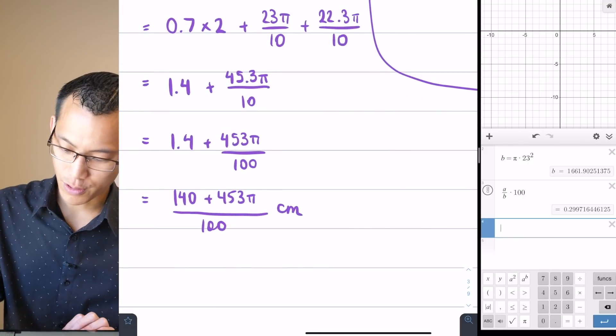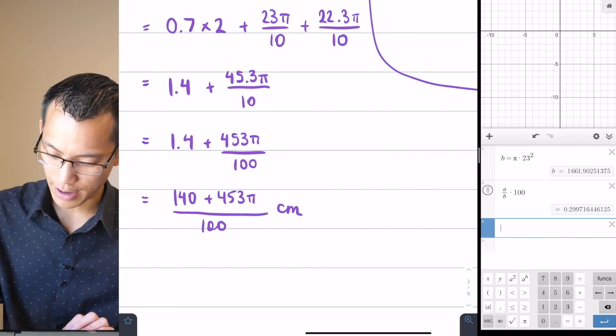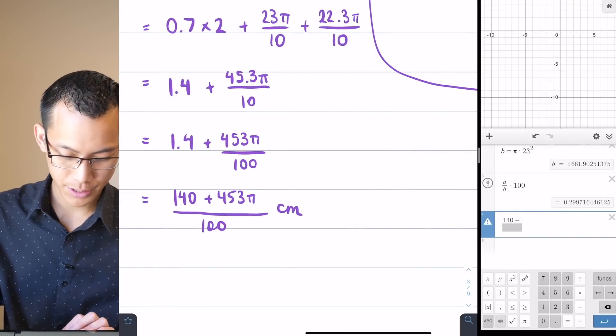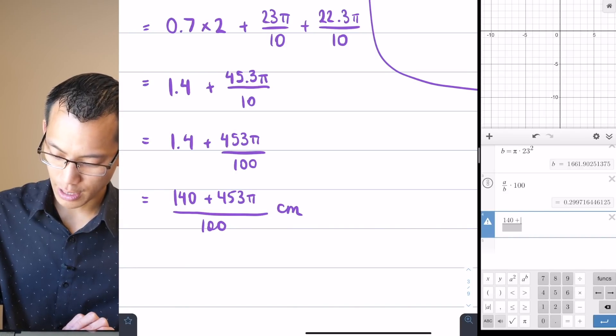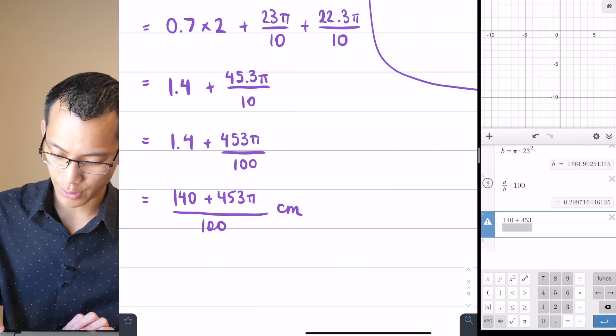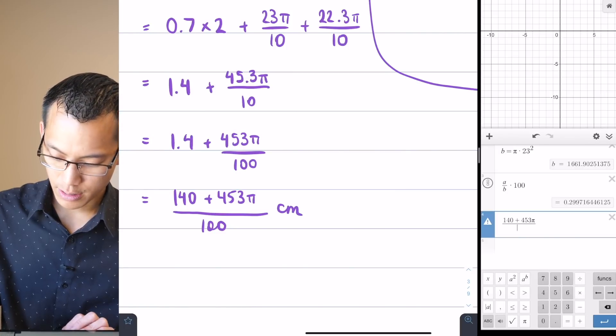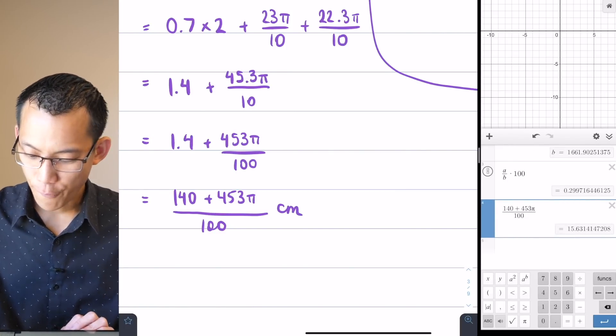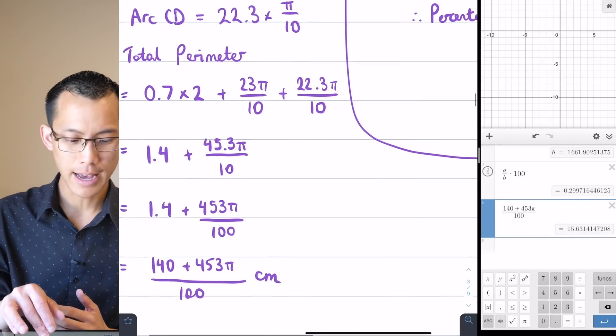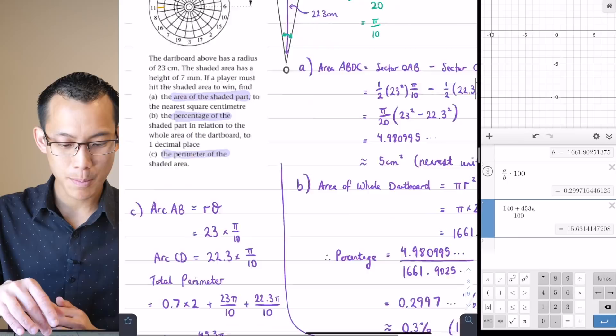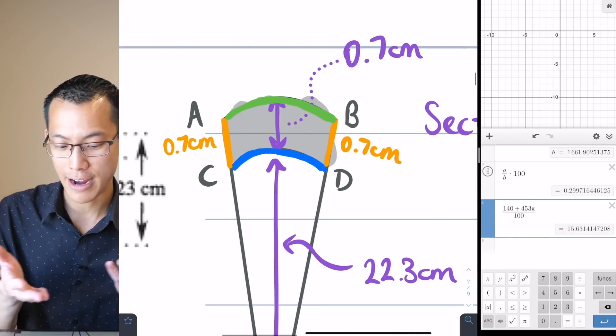So when we have a look here, what do we got? So let's do the fraction first. 140 plus 453 pi, that's the numerator. The denominator is a hundred, 15.6 centimeters. Does that sound reasonable at all? Well, hopefully it is making sense because remember this diagram, their diagram and my diagram, not to scale.